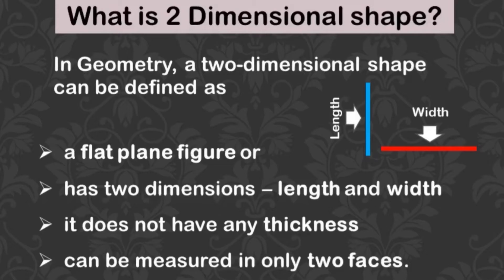A two-dimensional shape can be defined as a flat, plain figure or a shape that has two dimensions, like length and width. Two-dimensional or 2D shapes do not have any thickness and can be measured in only two faces.